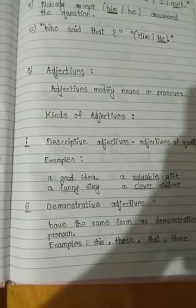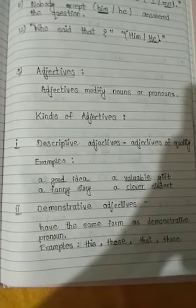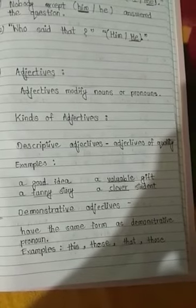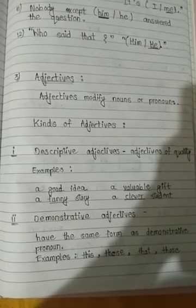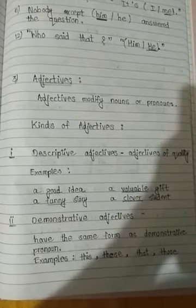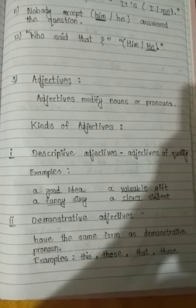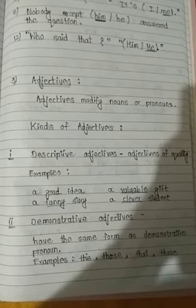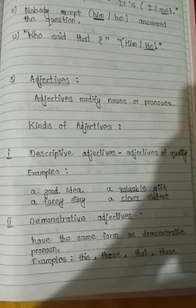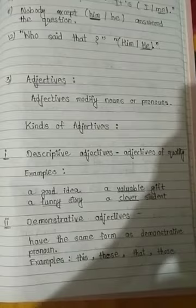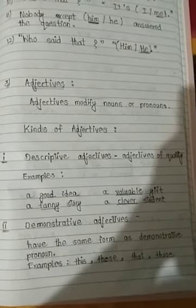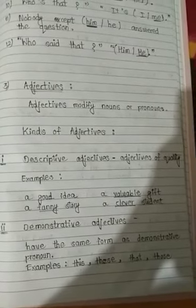Now let's start the third part of speech, that is adjectives. An adjective is a word that describes a noun or pronoun. Adjectives usually provide relevant information about the nouns or pronouns. They modify by answering the questions: what kind, how many, what shape or size, what color, and so on. For example, I have 10 candies in my pocket. How many candies do you have in your pocket? 10 candies.